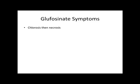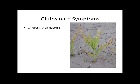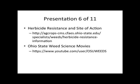The symptom progression is chlorosis, then necrosis. The plant will become chlorotic and then followed by necrotic tissue, leading to dead tissue. If coverage is not complete, you can get speckling. But if the plant is completely drenched or covered, then it will just become chlorotic, then necrotic.